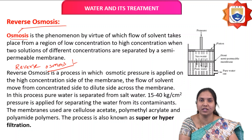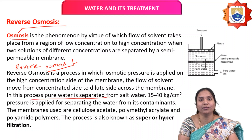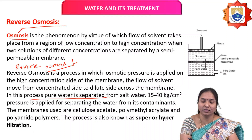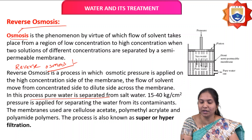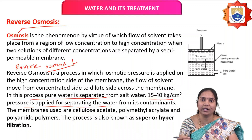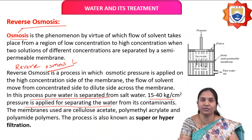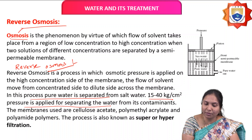This method is mainly used for purification of water — separating salt water from drinking water, converting hard water to soft water. A pressure of 15 to 40 kg/cm² is applied to separate water from its contaminants, removing hardness-causing ions, minerals, and other impurities.